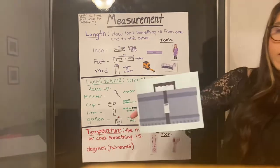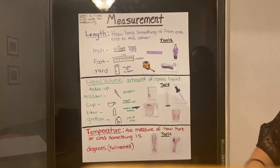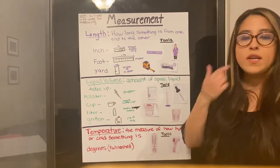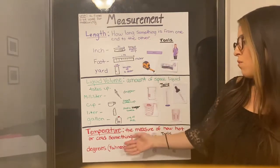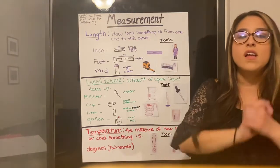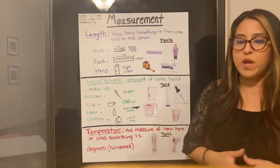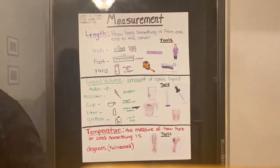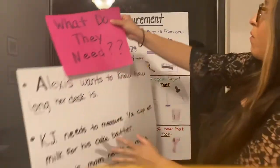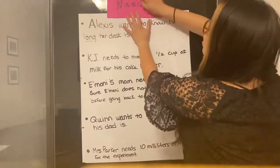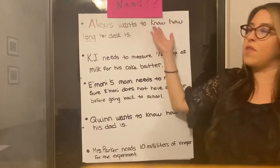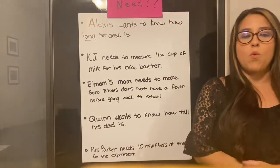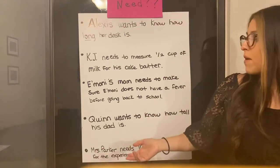So my toolbox is empty. We have lots of ideas for different tools that we can use to measure all these different things and find length, liquid volume or temperature. So now, now that we learned all of this, we are going to play a little game. My game is called what do they need? We're going to answer some questions and figure out what tool we need to solve them.